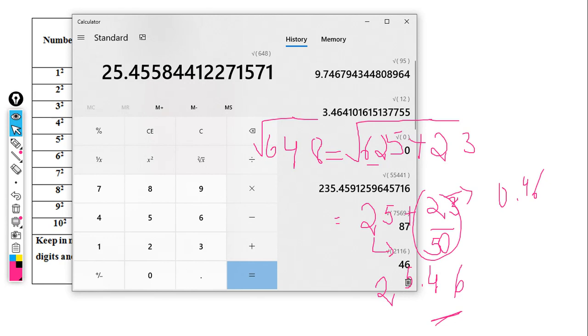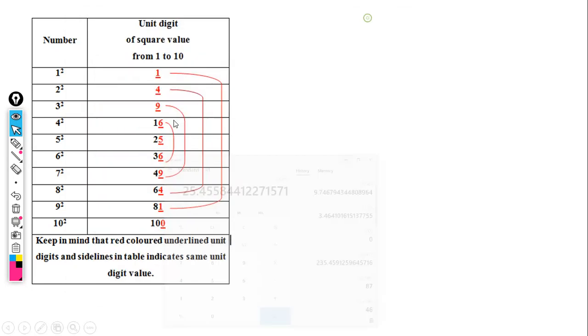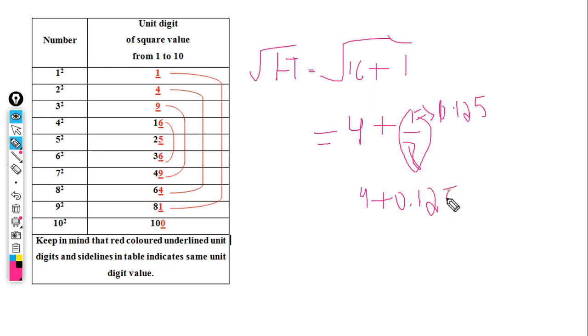For the square root of 648, the calculator shows 25.46, approximately 25.45 - the same answer. Now let me take the square root of 73. We know that 64 is 8 squared, so 64 plus 9 equals 73. The square root of 64 is 8. Then we take 9 divided by double of 8, which is 16. So 9 by 16 equals 0.125 as a fraction. Adding to 8 gives 8.125.